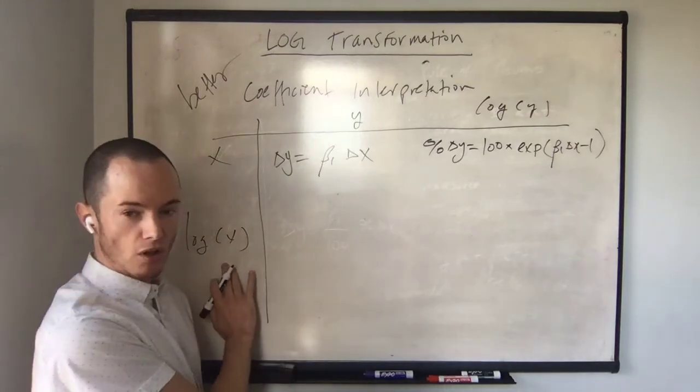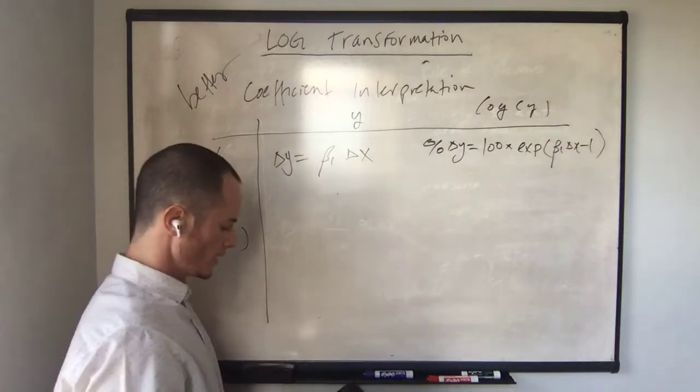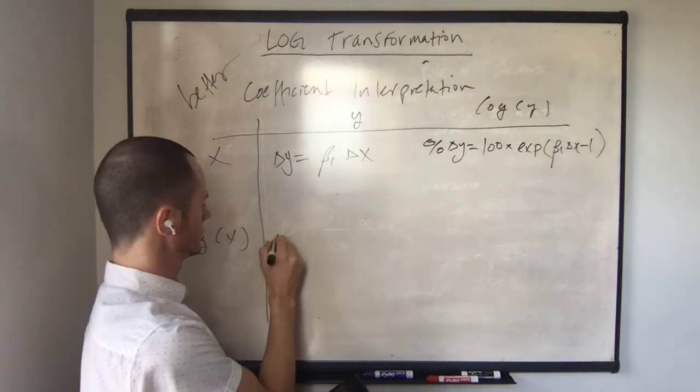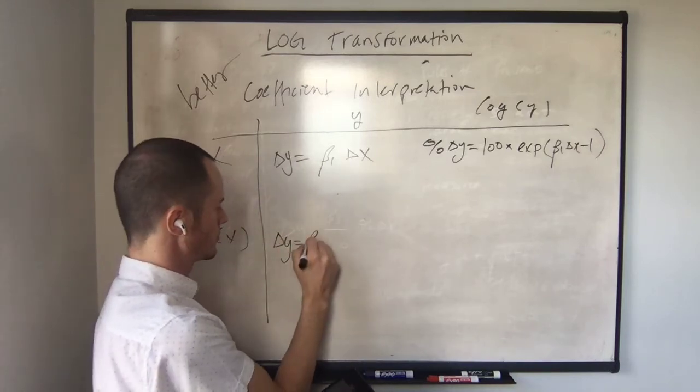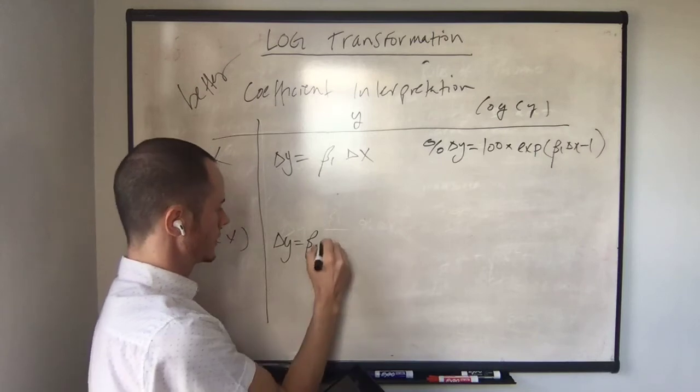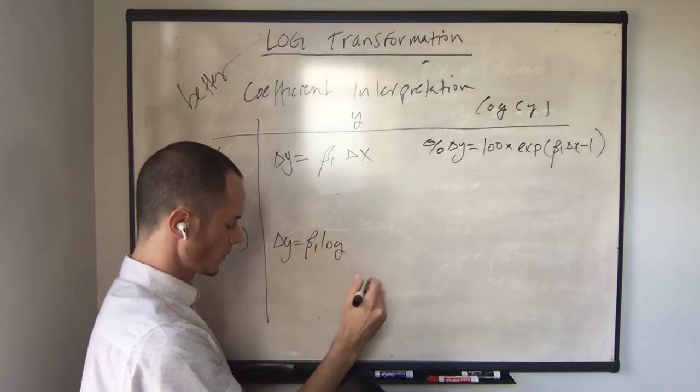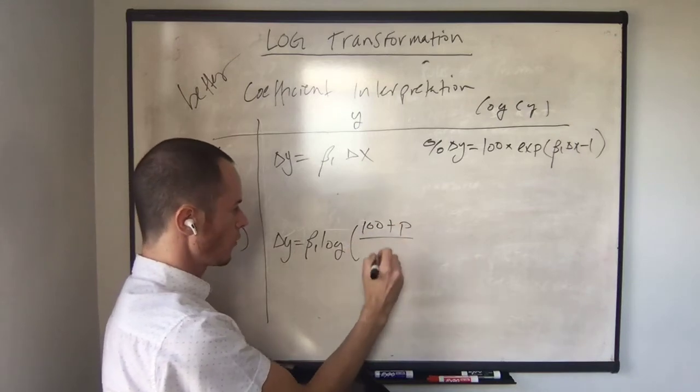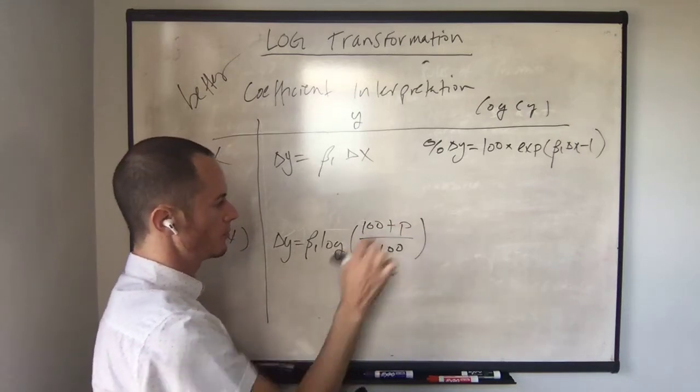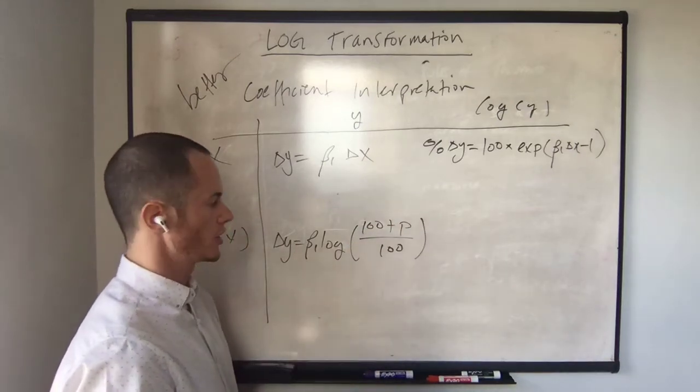For log of x and y in its original form, change in y is equal to beta 1 times the log of 100 plus p over 100, where p is the percent change in x.